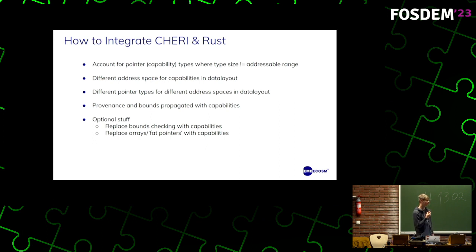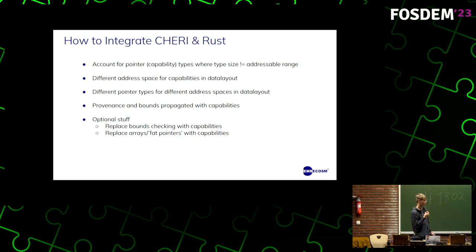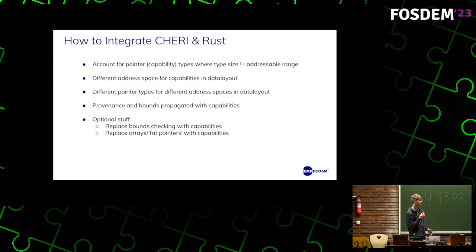Now that we know we want these benefits, how do we go about modifying Rust to get them? The main problem is that we need to account for capability sizes correctly — we need to stop assuming that pointer type size equals the addressable range of the pointer, because capabilities have metadata. Also, in the CHERI LLVM fork, capabilities are pointers in address space 200, whereas in Rust we assume all pointers to data are in address space 0. If we want to support hybrid mode, we need to specify different pointer type sizes for different address spaces. We also need provenance and bounds to be propagated through the compiler, because they need to be attached to capabilities.